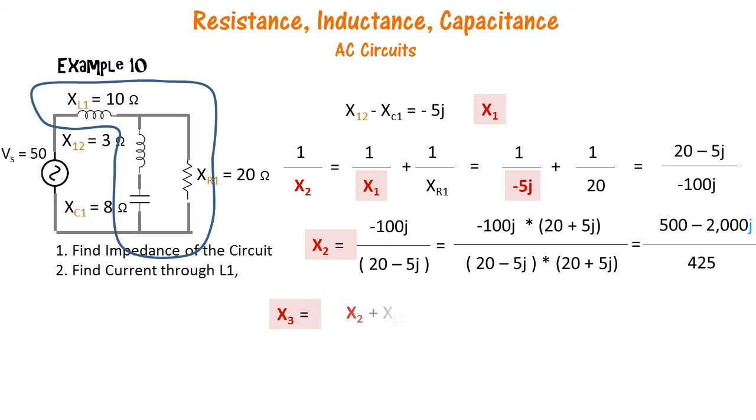And after finding x2, we basically say that this is in series with this net x2. And by adding the two vectors, this is the net vector that we get and this is our net impedance in the circuit.